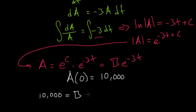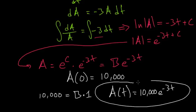So 10,000 is equal to b times e to the zero, which is 1. So our function A of t is simply 10,000 times e to the minus 3t. And this is our final answer. Thank you.